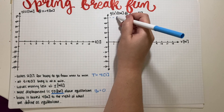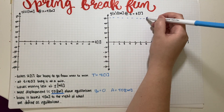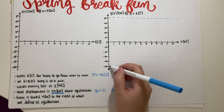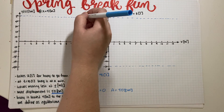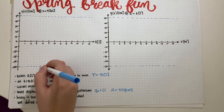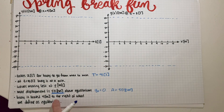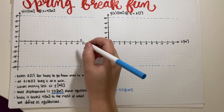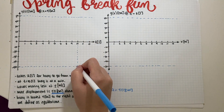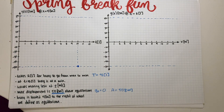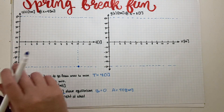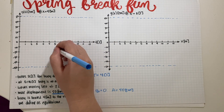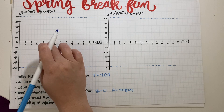Both graphs will have a maximum and minimum at the appropriate positions. At t = 10, the buoy is at a minimum, so we mark a minimum there. With our period of four seconds, every four seconds we hit another minimum — so t = 6 is also a minimum, and t = 2 is a minimum.